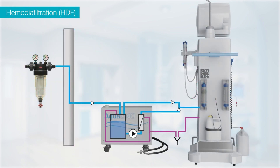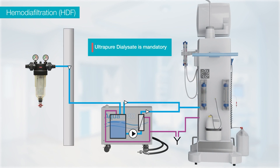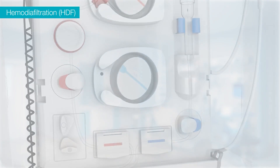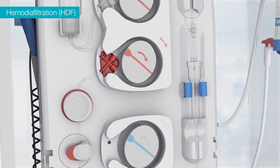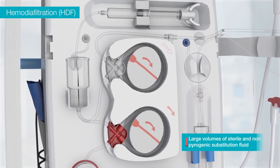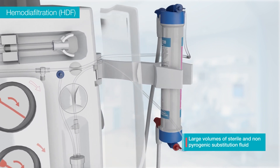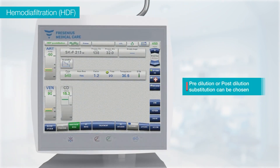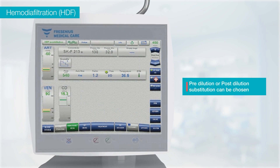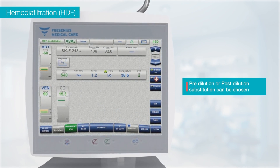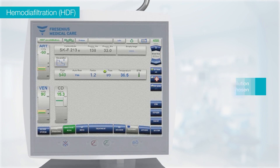For the online hemodiafiltration process in the 5008S, using ultra-pure dialysate is mandatory. The ultra-pure dialysate can be processed by using the Aqua UNO-RO system with endotoxin retention filters. The online hemodiafiltration process involves creation of large volumes of sterile and non-pyrogenic substitution fluid through a second endotoxin retention filter. Either pre- or post-dilution technique of substitution can be chosen as per the patient prescription, while post-dilution is the preferred modality worldwide.